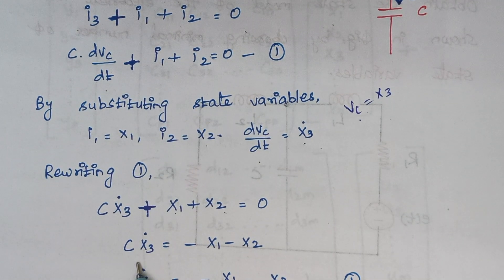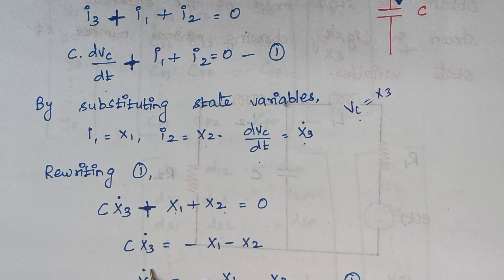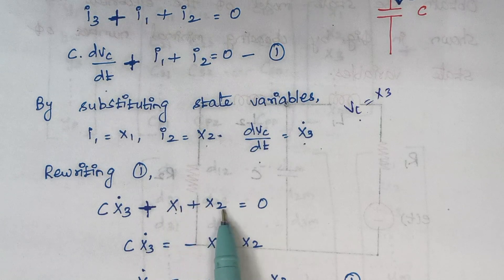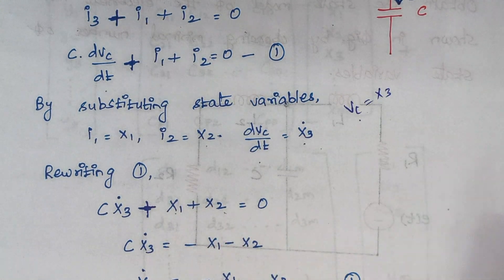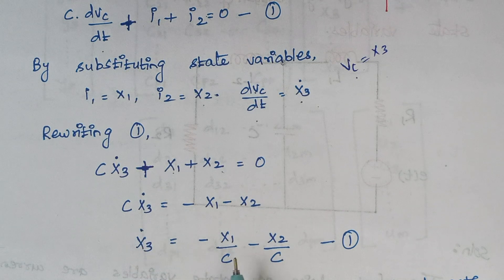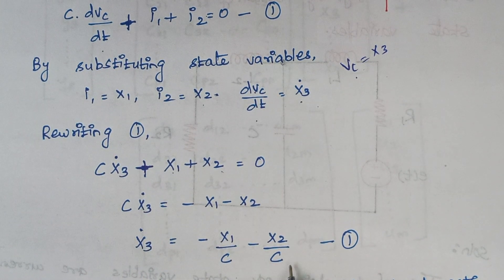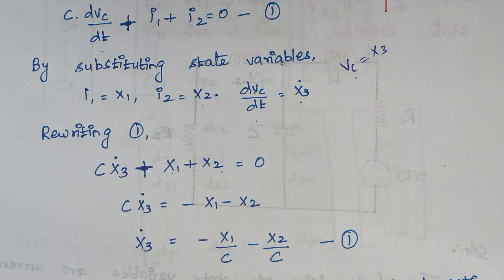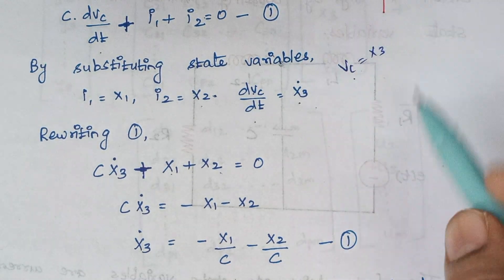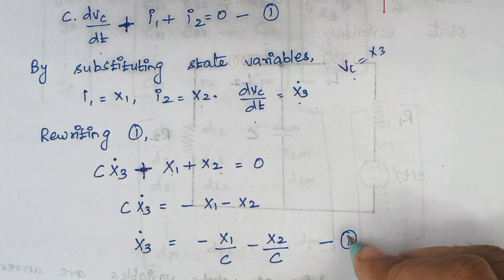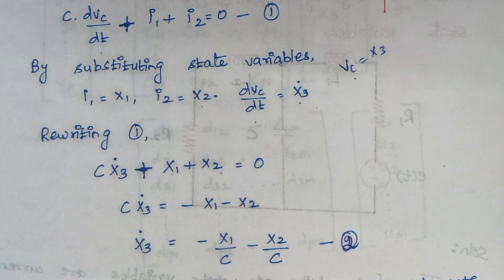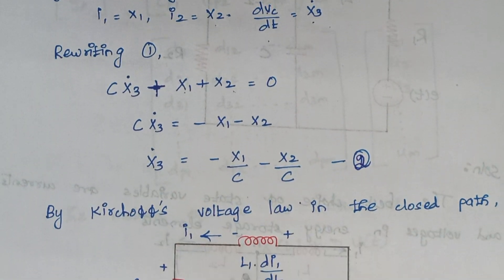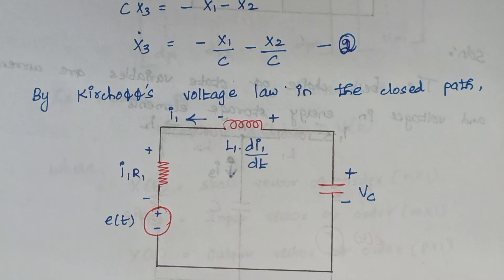Rewriting the expression: C·X3_dot plus X1 plus X2 equals 0. Keeping C·X3_dot on the left-hand side and shifting the other terms to the right, then moving C to the right-hand side where it occupies the denominator, we get: X3_dot = −X1/C − X2/C. Let this be equation number 2.